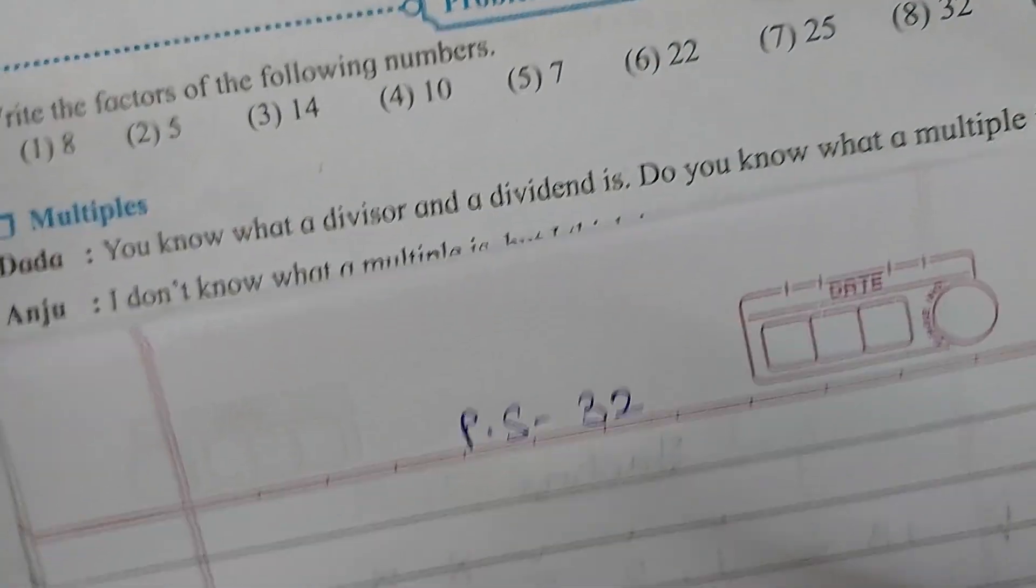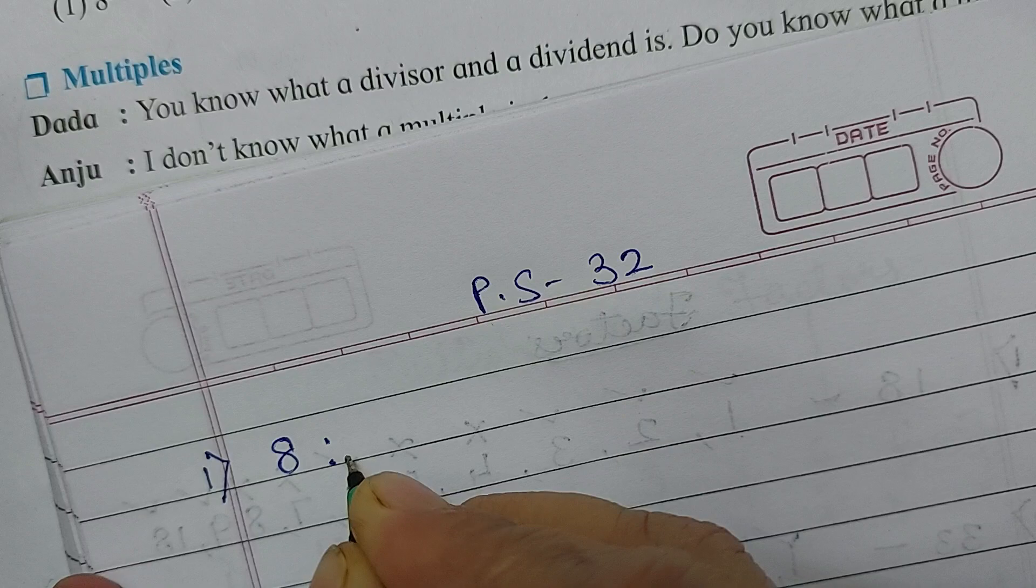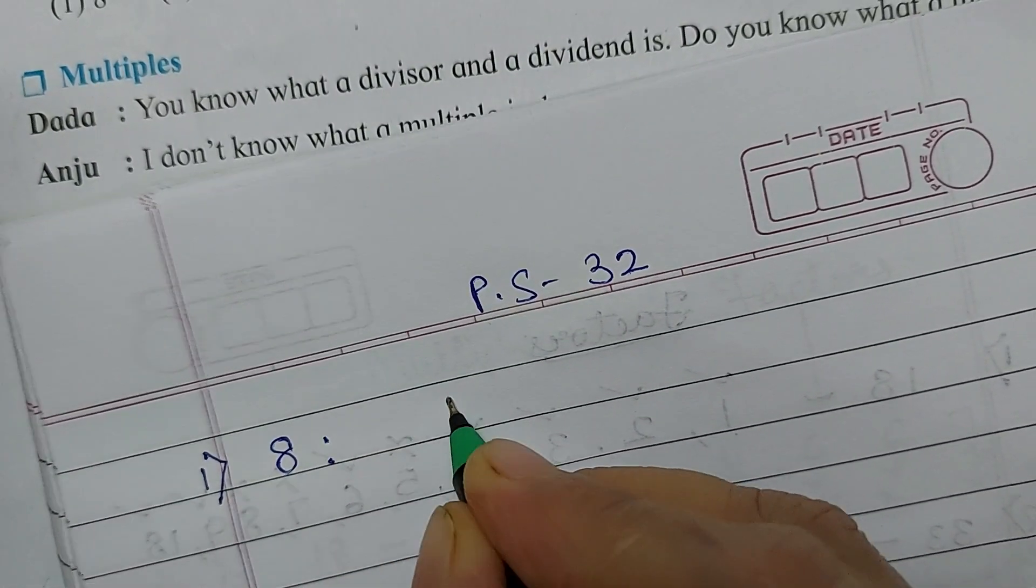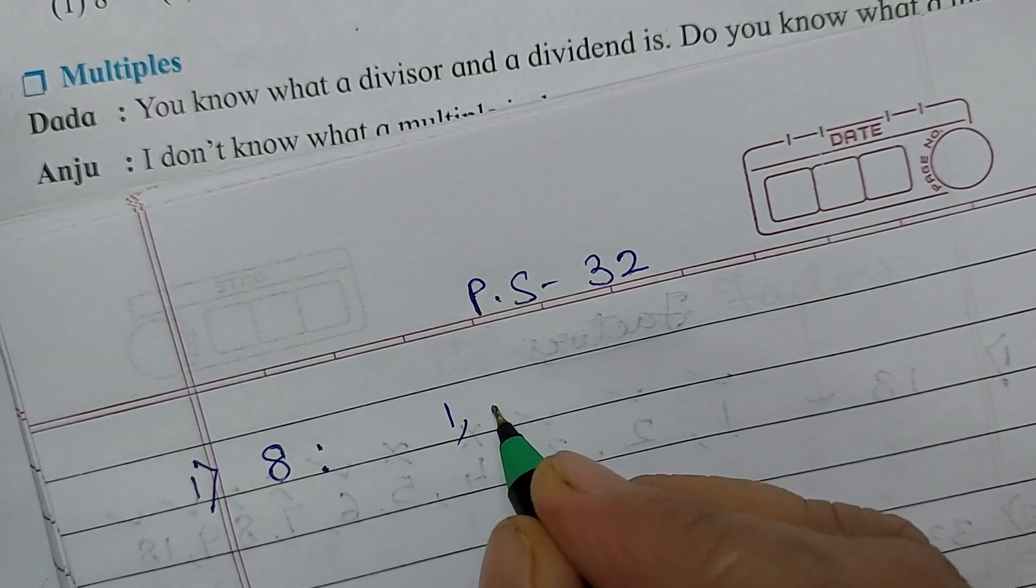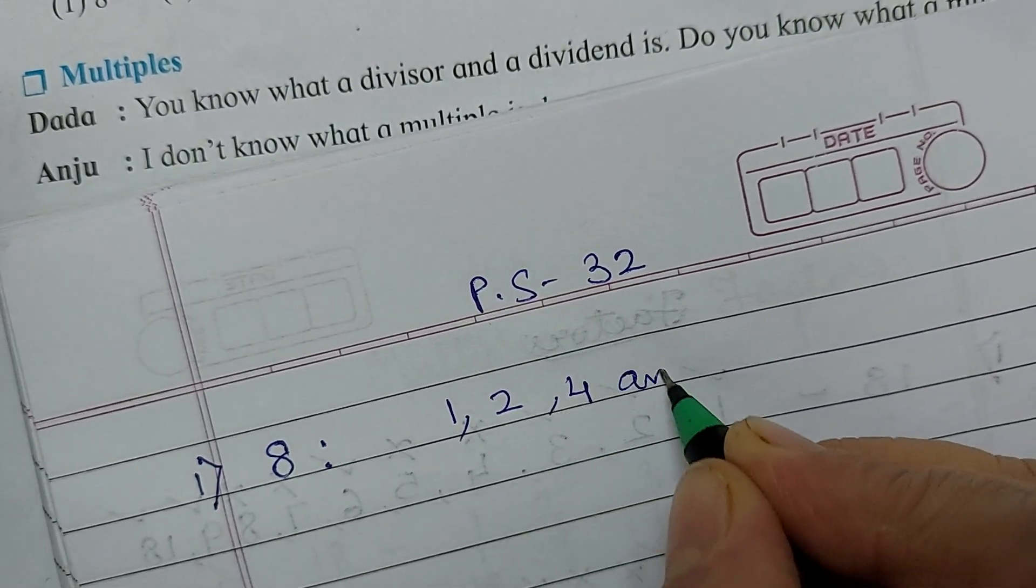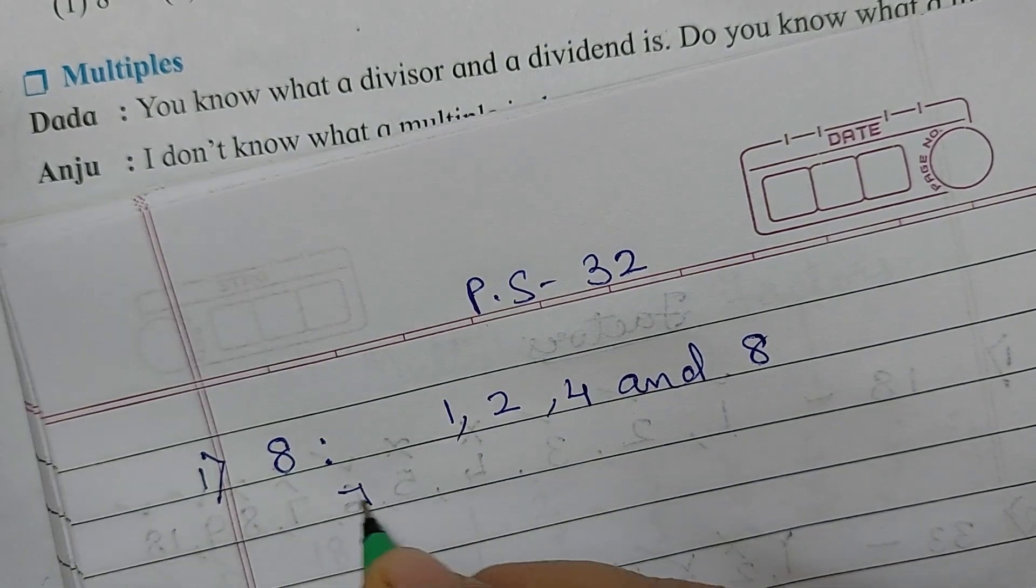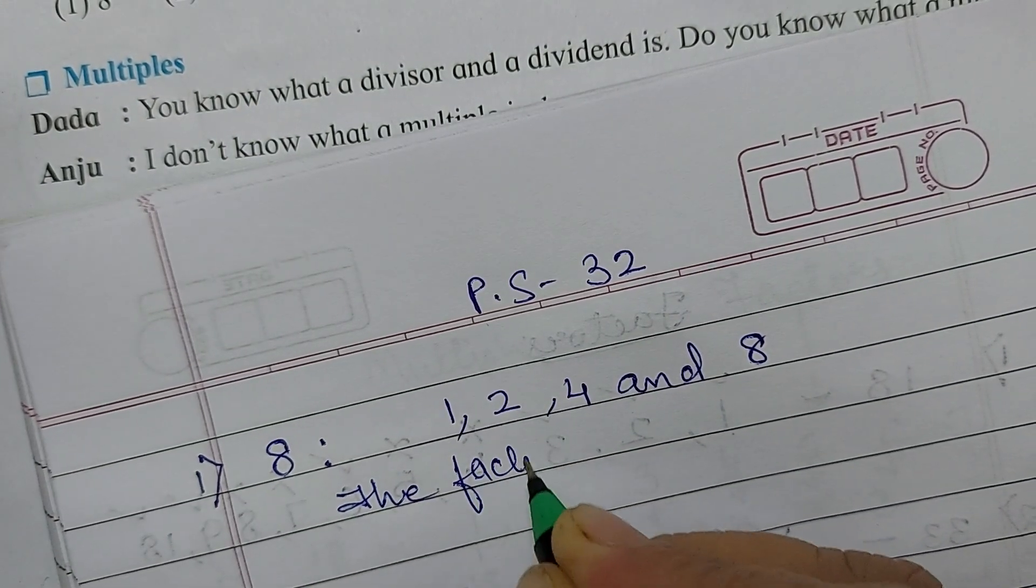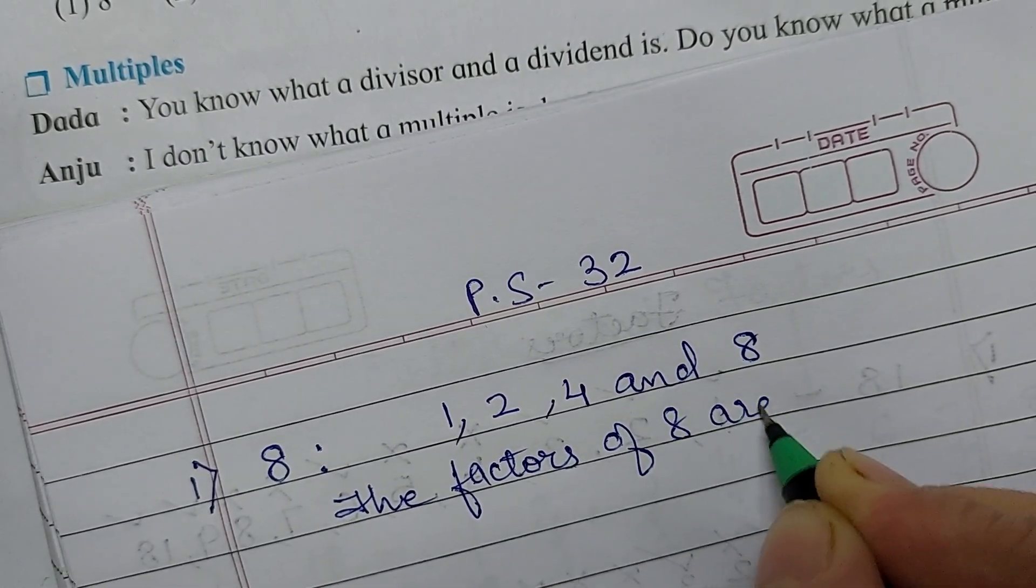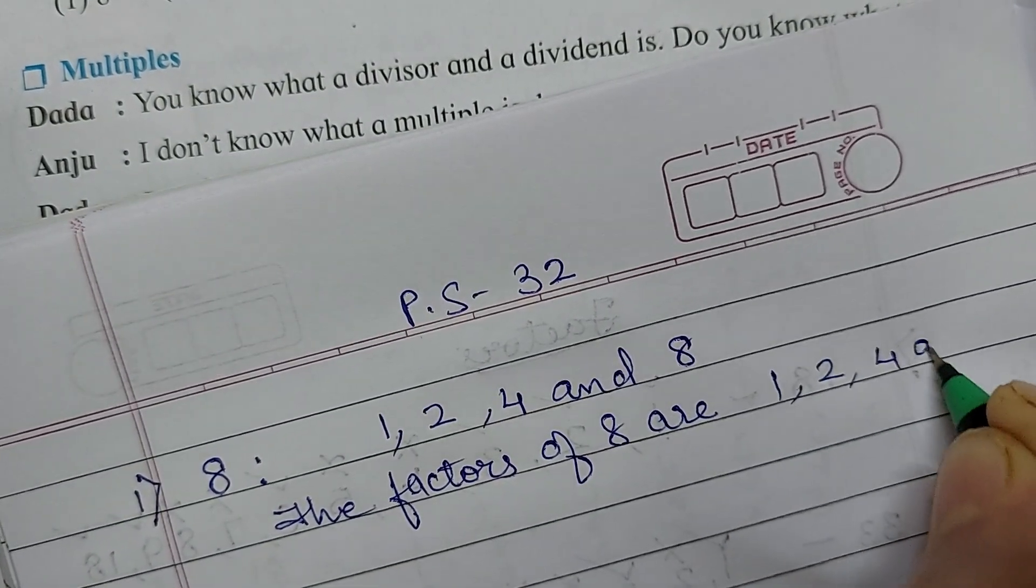Okay children. So what we have to do here, find out factors of 8. So how to find out that? Factors of 8 will be 1. As I said, 1 is there, 2, 4 and 8. You saw all the numbers are less than 8. So write the factors of 8 are 1, 2, 4 and 8.